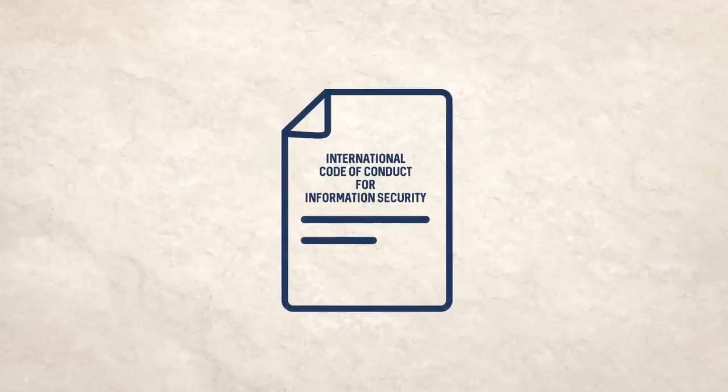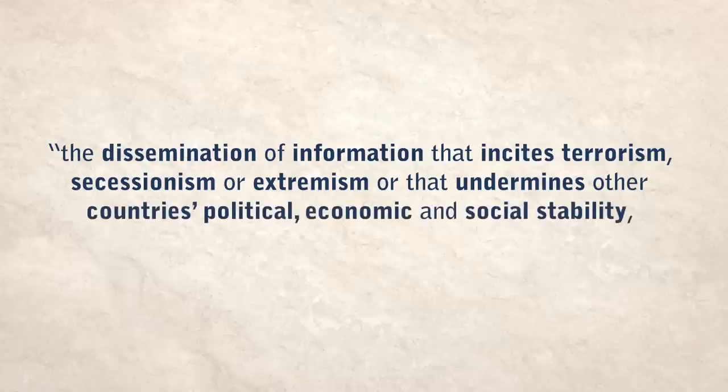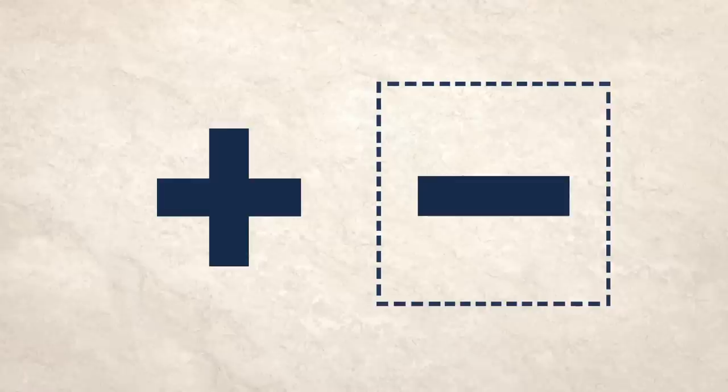Now, alongside China, they're trying to realize the second part internationally, with their proposal for an international code of conduct for information security. The proposal calls for international cooperation to curb the dissemination of information that incites terrorism, secessionism or extremism, or that undermines other countries' political, economic and social stability, as well as their spiritual and cultural environment. This example shows how a negatively framed definition can provide cover for actions which threaten human rights both nationally and internationally.